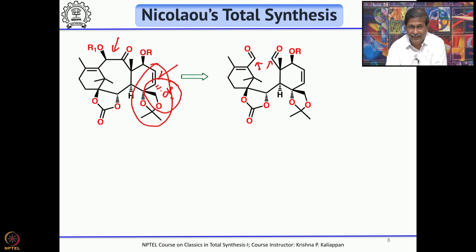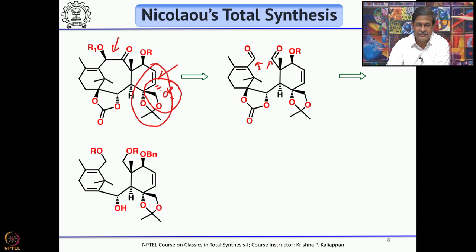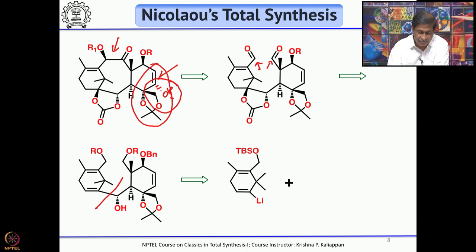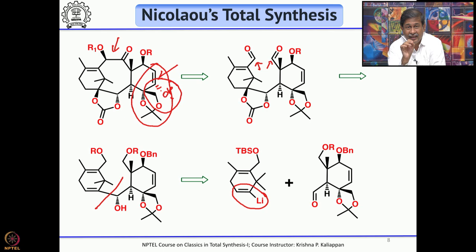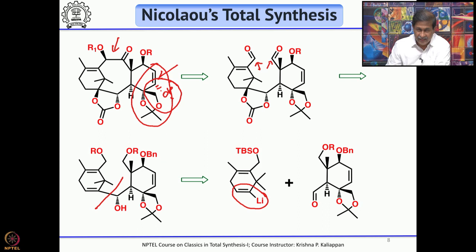The dialdehyde can be obtained from the corresponding protected primary alcohols. This is a very interesting transformation: breaking this bond gives a vinyllithium species on the left-hand side and a dialdehyde on the other. The vinyllithium species can be prepared through the Shapiro reaction — if you have a tosylhydrazone and treat with butyllithium, it generates a vinyllithium species, which can then be quenched with the aldehyde to give the allylic alcohol.